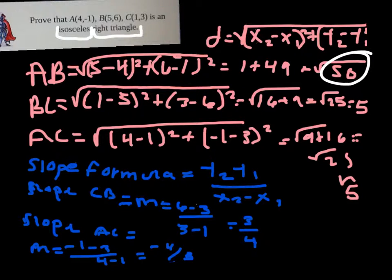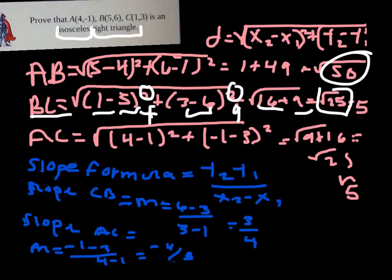For BC, 1 minus 5 equals negative 4, which squared is 16. Add it to 9 because 3 minus 6 equals negative 3, which squared equals 9. So you get the square root of 25, which is a perfect square, so you get 5.